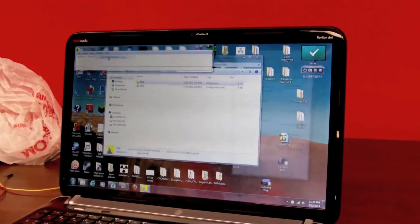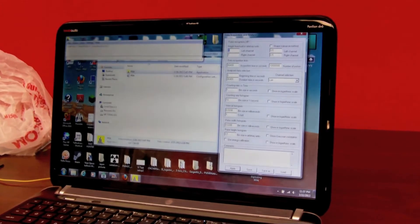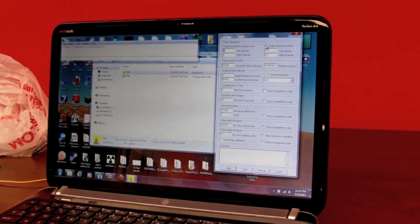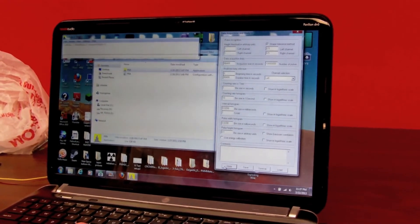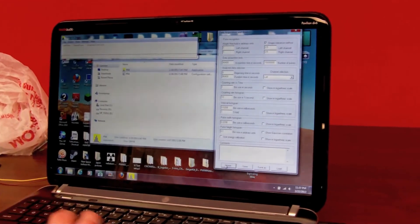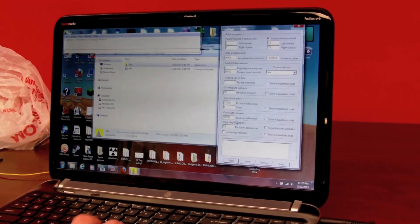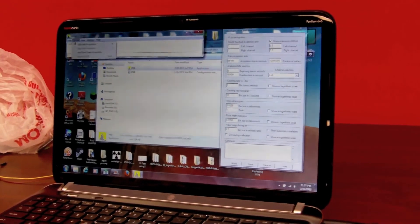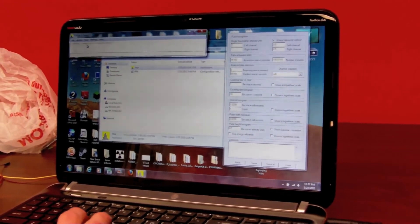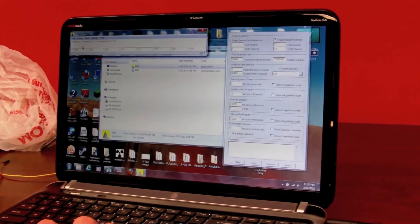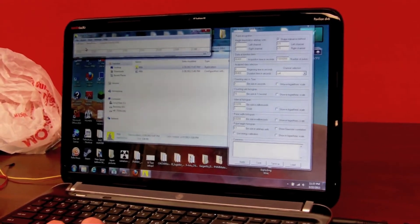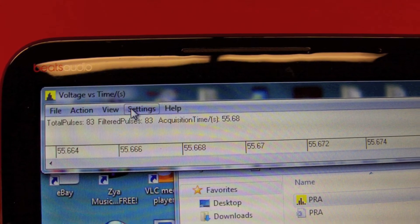Alright, so you're going to want to set in the data acquisition analysis, you're going to want to set the shape tolerance method. And what it's doing is looking for a specific pulse shape. It helps improve the data quality. And then we go to action, start data acquisition. And it's going to start counting pulses.